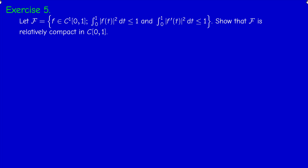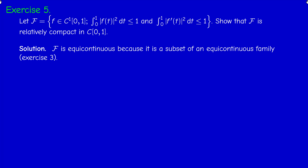The main tool is the Arzelà-Ascoli theorem. To prove that F is relatively compact we have to prove two things: F is equicontinuous — and actually proved that in exercise 3 because this is a sub-collection of the collection of exercise 3 — and second, pointwise boundedness. Equicontinuity follows from exercise 3, and the second point, which is not trivial, requires us to prove that F_x for every x in [0,1] is pointwise bounded. Pointwise boundedness is equivalent to pointwise relative compactness.